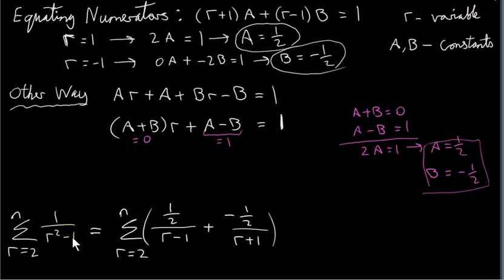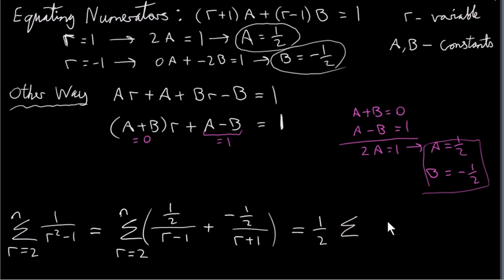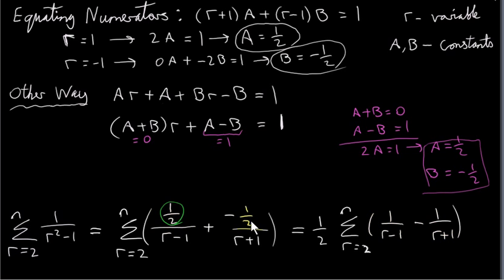So 1 over r squared minus 1 equals A over (r minus 1) plus B over (r plus 1), where A is one half and B is minus one half. We can factor the one half out of the expression, bringing it out to the front of the Sigma, giving one half times Sigma of (1 over r minus 1) minus (1 over r plus 1).